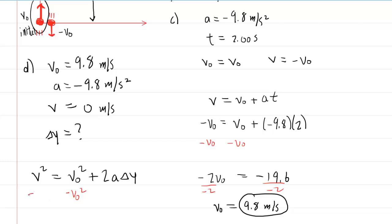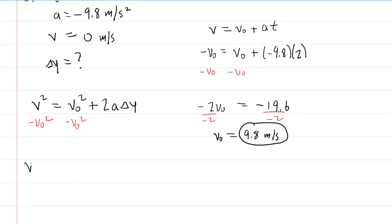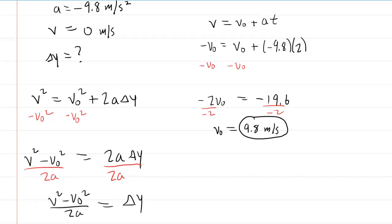We might want to solve this for the vertical displacement and then we can plug in the known values. So we'll subtract the initial velocity squared from both sides of the equation. This will give us v squared minus v naught squared equals 2a delta y. And then finally, to solve for delta y, we'll divide both sides by 2a. So then we can see that this final expression here will give us that vertical displacement. So that would give us the maximum height of the tennis ball.